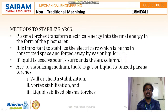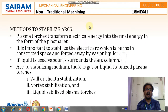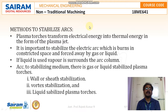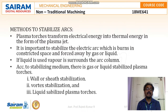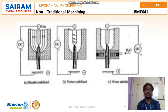Plasma torches transform electrical energy into thermal energy in the form of a plasma jet. It is important to stabilize the electric arc, which burns in a constricted space and is forced by gas or liquid. If liquid is used, vapor surrounds the arc column. According to the stabilizing medium, there are gas or liquid stabilized plasma torches. The stabilization methods are: wall or sheet stabilization, vortex stabilization, and liquid stabilization.